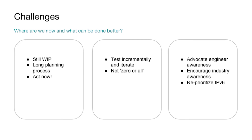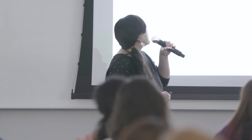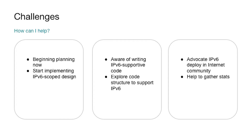What are some challenges and lessons learned? For Uber, this is definitely a long planning process and still a work in progress. Our advice is to act now while you're still motivated. IPv6 deployment is never an all-or-nothing implementation — it requires incremental testing and iteration. We want to advocate engineer awareness when writing code to ensure IPv6 support. Everyone here can help by planning IPv6 capability into software and firmware designs, writing IPv6-supportive code, and advocating IPv6 deployment in the wider internet community to help gather more statistics and feedback. Thank you.